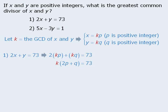Now, since p and q are both integers, we know that 2p plus q must be an integer. And if k times some integer equals 73, then it must be the case that k is a divisor of 73. Since 73 is a prime number, its only divisors are 1 and 73, which means k must equal either 1 or 73.